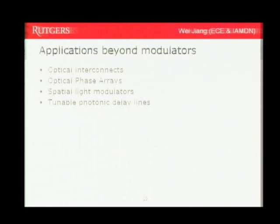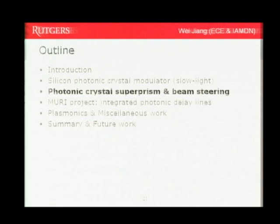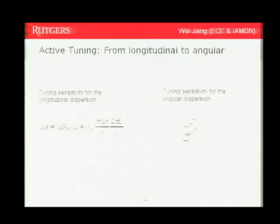Beyond the modulator, we can apply the slow-light effect to optical interconnects and optical phased arrays. The third part is about the photonic crystal superprism. In the previous modulator example, using slow light and high dispersion in photonic crystal waveguides, we can significantly enhance phase shift — that's the longitudinal effect. Now we consider the angular effect. Before our comprehensive work, no one knew a simple equation to describe the angular dispersion sensitivity. The superprism effect is based on an analogy between a conventional prism and a photonic crystal. In a 1998 experiment, if you hit a photonic crystal and change the incident wavelength from 0.99 to 1 micron — about one percent wavelength change — the angular difference of the transmitted light can be 50 degrees.